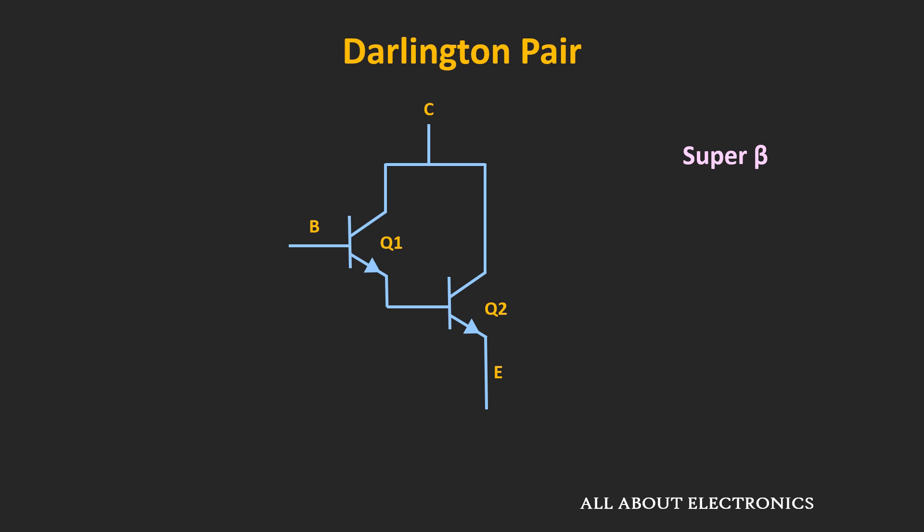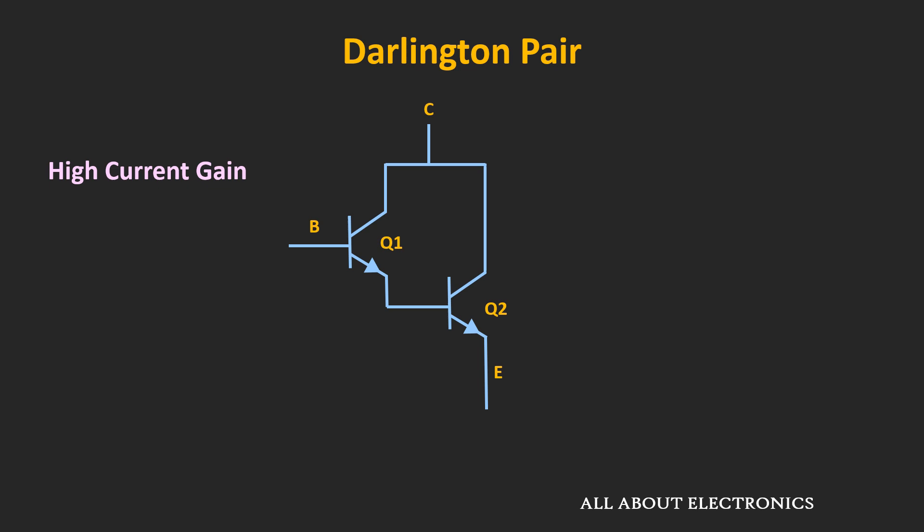In this configuration, the emitter of one transistor is connected to the base of the second transistor, and the collectors of both transistors are connected together. If β1 and β2 are the current gains of transistors Q1 and Q2, then the overall current gain of this Darlington pair, βd, can be given as β1 times β2.